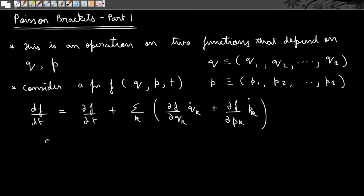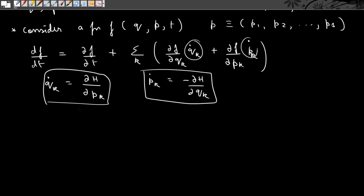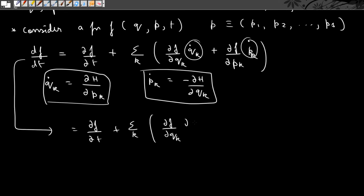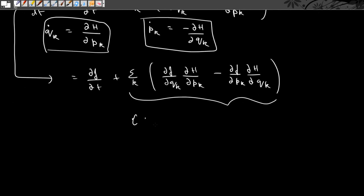From Hamilton's equations we know that Q_K dot is nothing but ∂H/∂P_K and P_K dot is equal to minus ∂H/∂Q_K. Substituting these two relations, this will now become ∂F/∂T plus summation over K: ∂F/∂Q_K times ∂H/∂P_K minus ∂F/∂P_K times ∂H/∂Q_K. This particular quantity is defined as the Poisson bracket of the Hamiltonian and the function F with respect to P and Q.